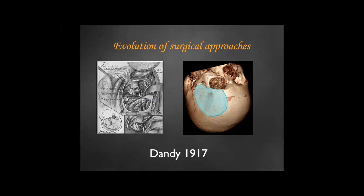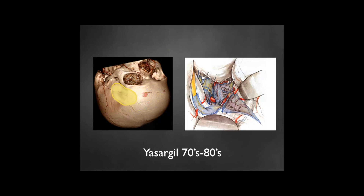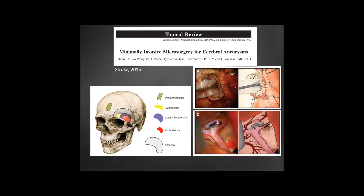Looking at the history of intracranial aneurysms, one of the first surgeries was done by Dundee in 1917 through a big frontal temporal zygomatic and orbital approach called the omega sign approach. Then from that time to the late 70s, Professor Yasargil introduced the pterional approach, a major advancement using a craniotomy centered on the pterion, natural cisternal pathways, improved illumination with the microscope, and microsurgical instruments.